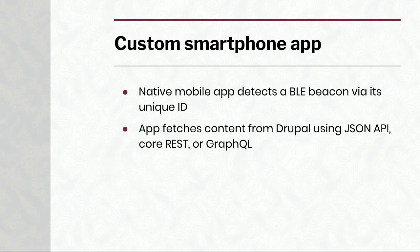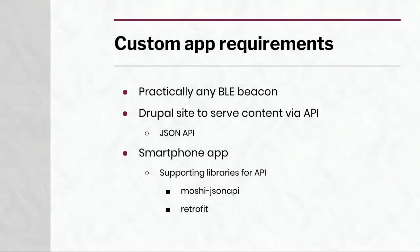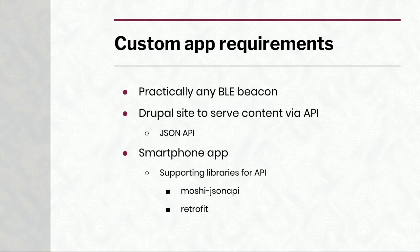The other approach is to use a custom smartphone app. In this case, the app detects the nearby beacon, notices its unique ID, and can do whatever it wants with that ID. It needs to get some more content, so it uses JSON API — it can do a query based on that beacon's ID and get whatever data should be associated with that location. You can also use Core REST, GraphQL, or even a custom-rolled API. This works with practically any Bluetooth Low Energy beacon on the market today. You also need the Drupal site with your custom content and an API enabled. You need to develop a smartphone app, and similarly to the AR use case, you can use supporting libraries like Moshi, JSON API, and Retrofit.